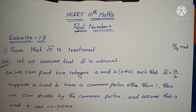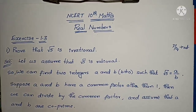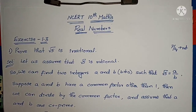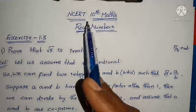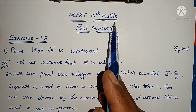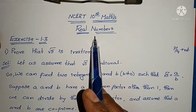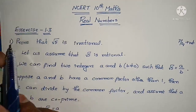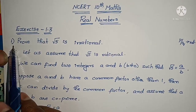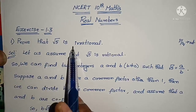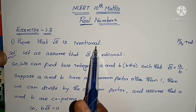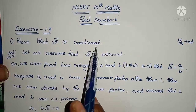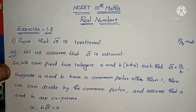Hello, welcome to Parnika Maths. Today we are going to discuss NCERT 10th Maths Real Numbers Exercise 1.3. The first problem is: prove that root 5 is irrational. I have to prove that root 5 is an irrational number.